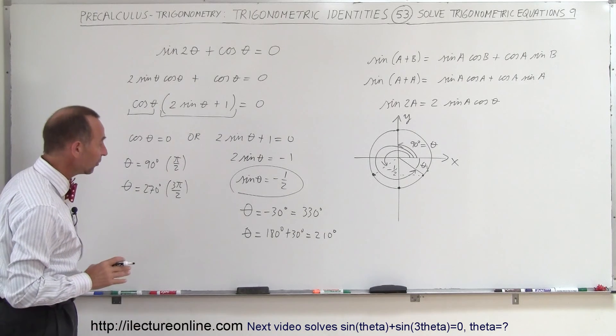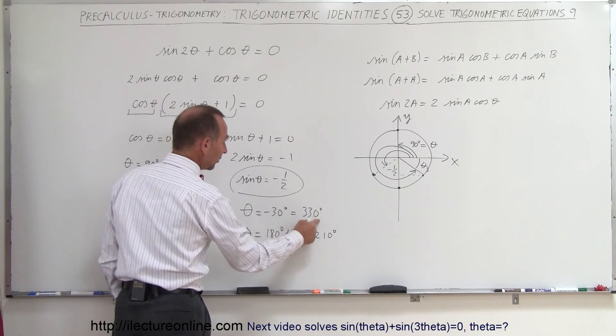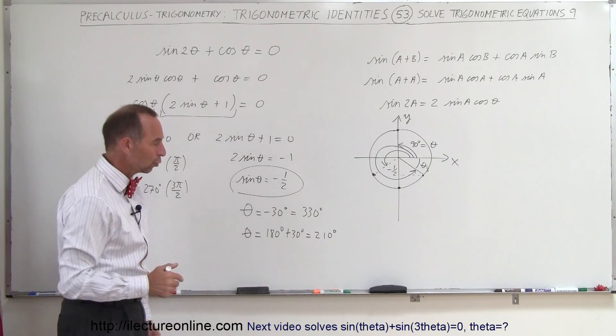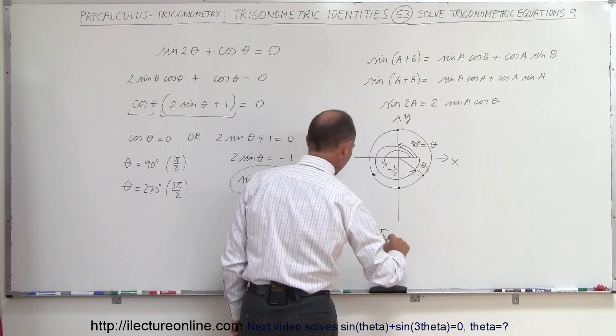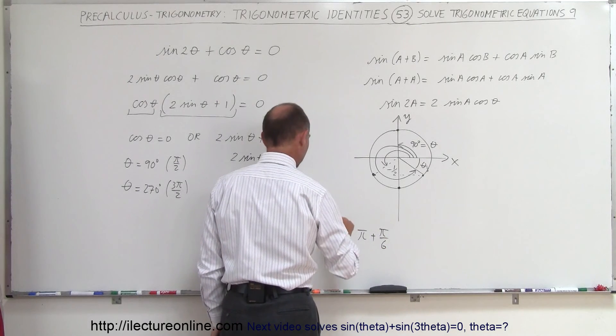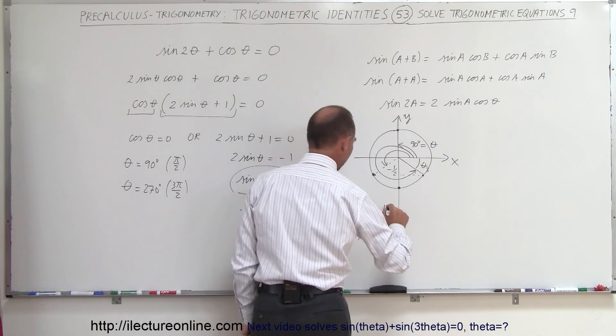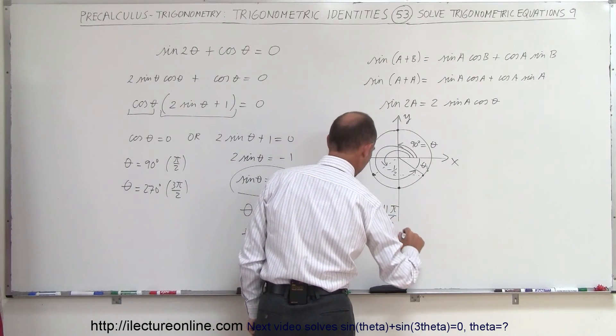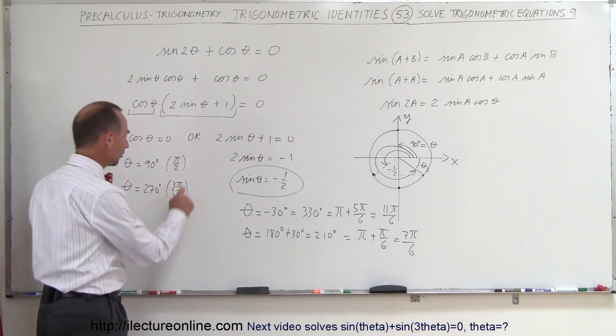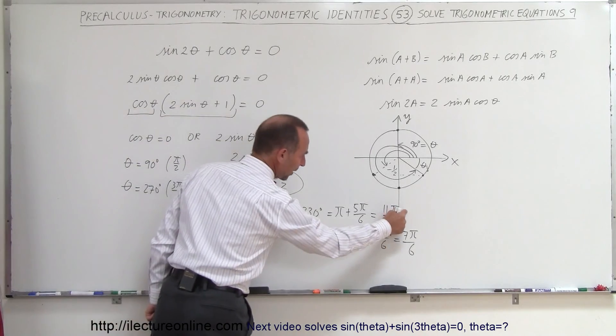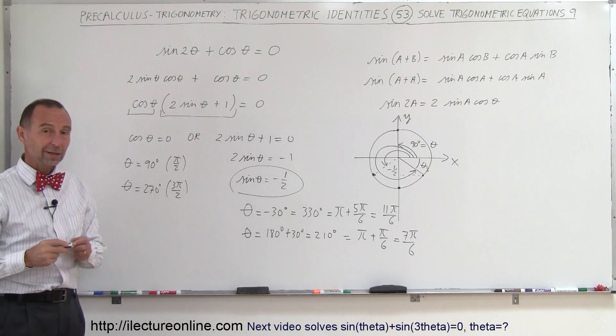So there's actually four angles: 90 degrees and 270 degrees, 330 degrees and 210 degrees. Of course, you can convert that to radians, so this is equal to pi plus pi over 6 radians, and this is equal to pi plus 5 pi over 6 radians, so that would be 11 pi over 6, and this would be 7 pi over 6. So here's your three, or your four possible answers: pi halves, 3 pi over 2, 11 pi over 6, and 7 pi over 6. Four possible angles for making that equation equal to zero.